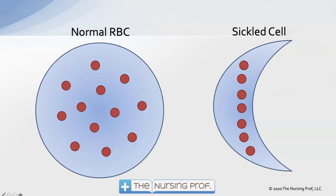Let's look at what's happening with a cell that is sickling. On the left is an illustration of a normal red blood cell — round, with little hemoglobin molecules represented as red dots, moving through circulation carrying oxygen to tissues. In a sickled cell, the hemoglobin lines up in a straight line and binds together. That bind is irreversible, so once the cell has sickled it remains sickled, dies, is removed by the spleen, and is no longer effective for any bodily function.